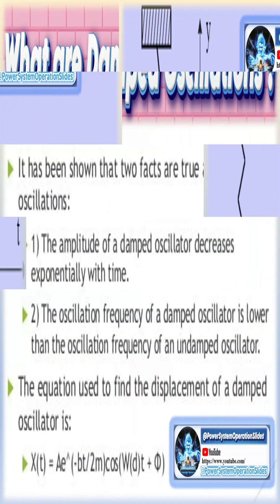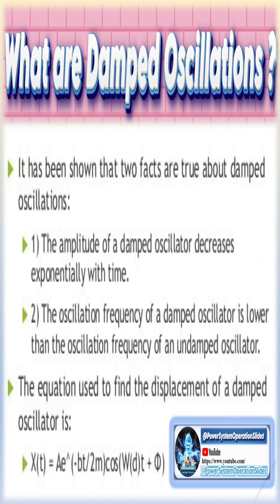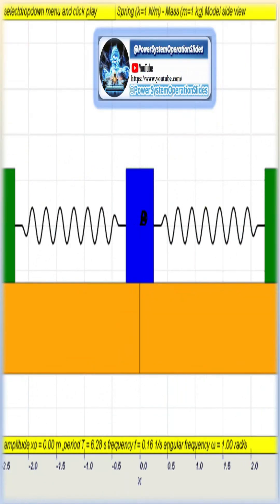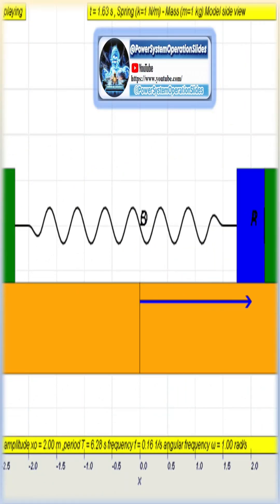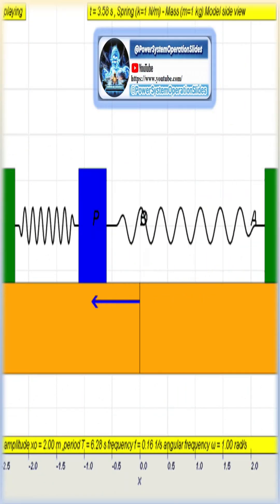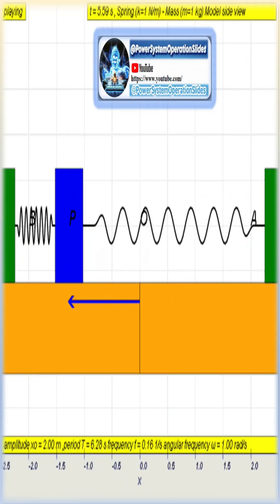These oscillations continue indefinitely without diminishing, maintained by an external energy source. In undamped oscillations, the amplitude stays steady over time because there are no power losses or provisions needed to compensate for them.